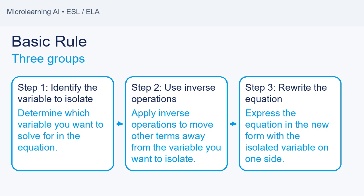Basic Rule. Step 1: Identify the variable to isolate. Determine which variable you want to solve for in the equation. Step 2: Use inverse operations. Apply inverse operations to move other terms away from the variable you want to isolate. Step 3: Rewrite the equation. Express the equation in the new form with the isolated variable on one side.